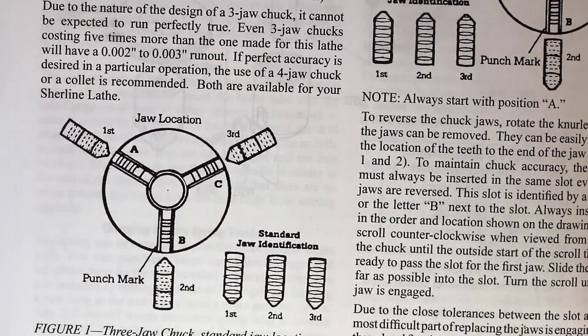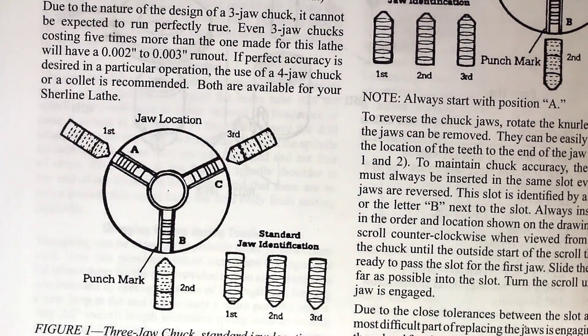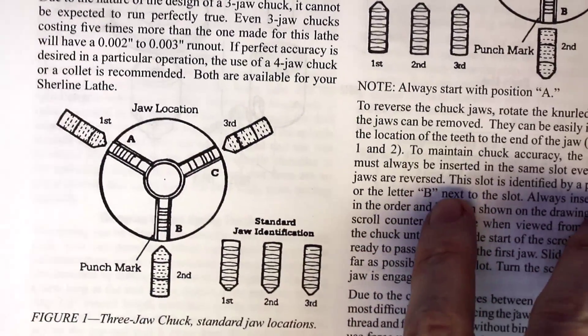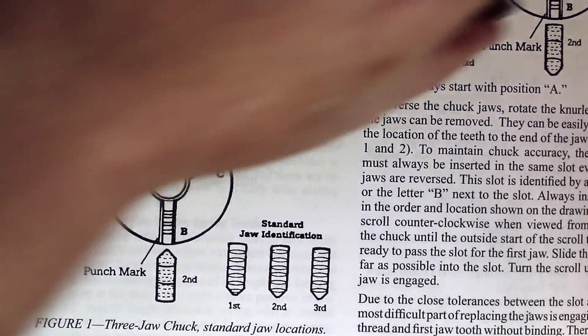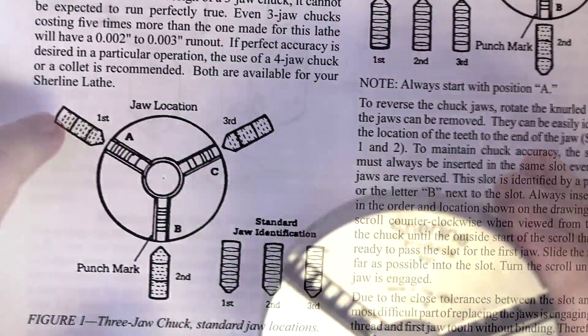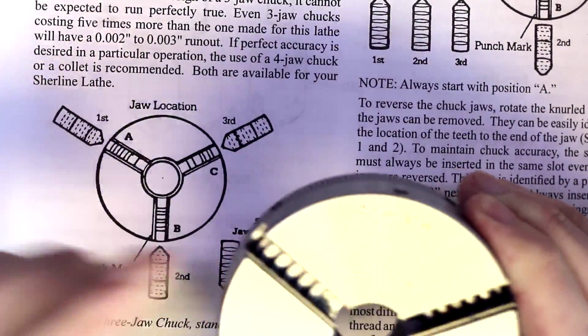I'm going to go ahead and scroll these out again and remove them. And then taking a look at the instruction manual for placing the three jaw in their standard locations, we're going to follow those instructions. So our first jaw is going to be again in the A location.